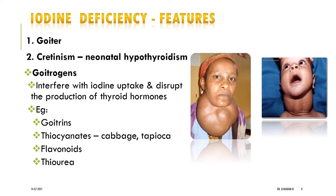Iodine deficiency is an important public health problem and is a preventable disease. Iodine deficiency can cause simple enlargement of the thyroid gland, and in endemic status it is usually found in hilly regions known as the goiter belt. Low iodine levels affect the synthesis of thyroid hormone, thereby stimulating the secretion of TSH from the anterior pituitary. TSH in turn stimulates the thyroid gland, leading to hypertrophy and hyperplasia of follicular cells of the thyroid gland, causing enlargement.